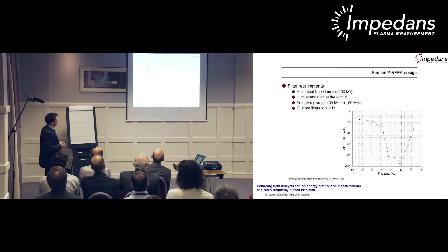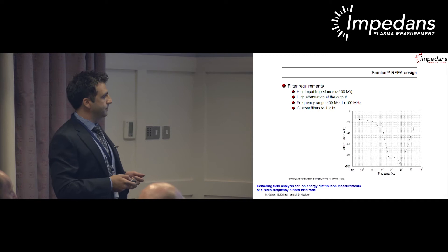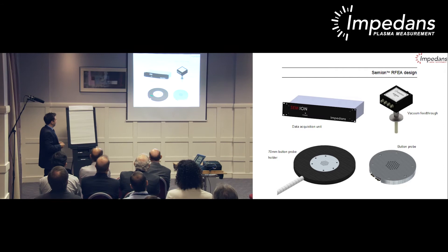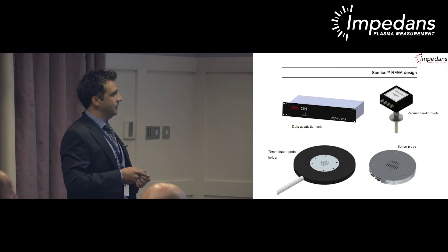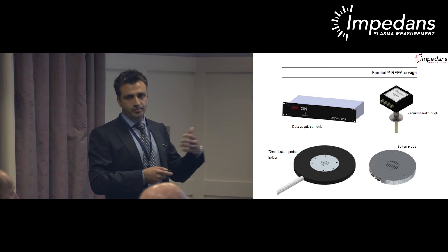Detailed information on the filtering has been published. The impedance needs to be quite high—typically greater than 200 kilo-ohms—so as not to disturb the RF bias. High attenuation at the filter output protects the electronics, with greater than 60 dB attenuation over the 400 kilohertz to 100 megahertz range, typical for RF applications. This can be pushed down to 1 kilohertz for pulse DC industry applications. The system consists of the probe holder, a replaceable sensing element, signal cable to a vacuum feedthrough, and a box of electronics to apply potentials and record ion current.